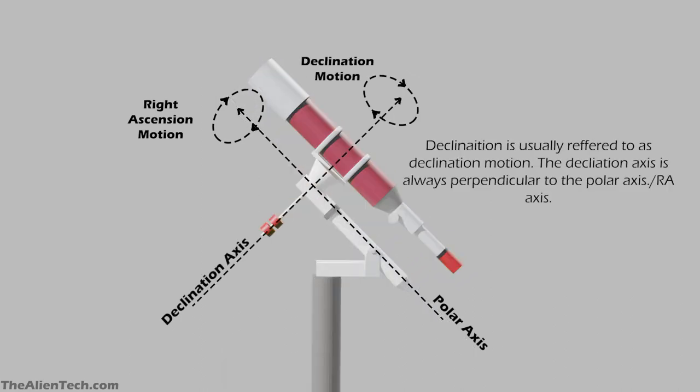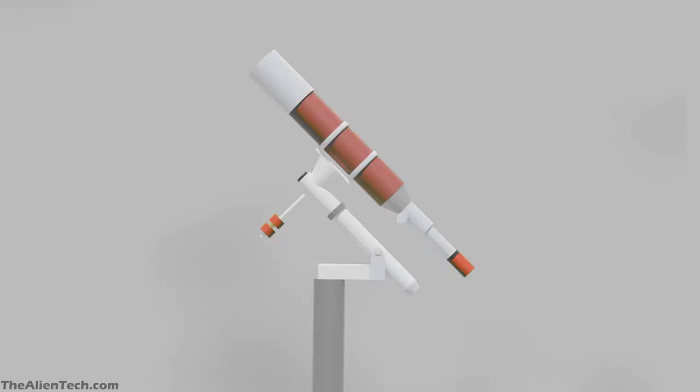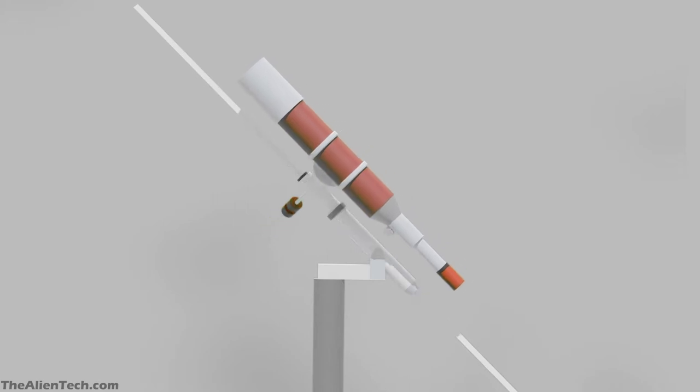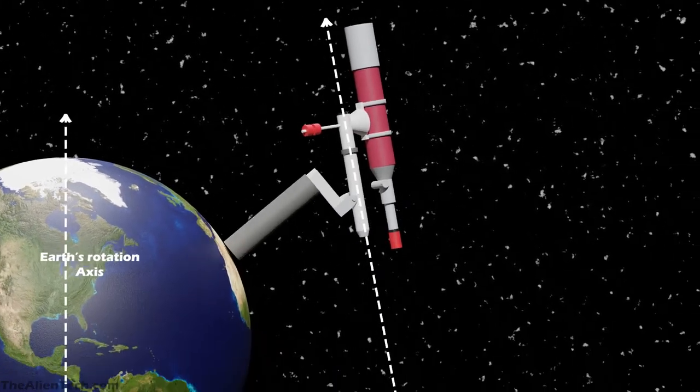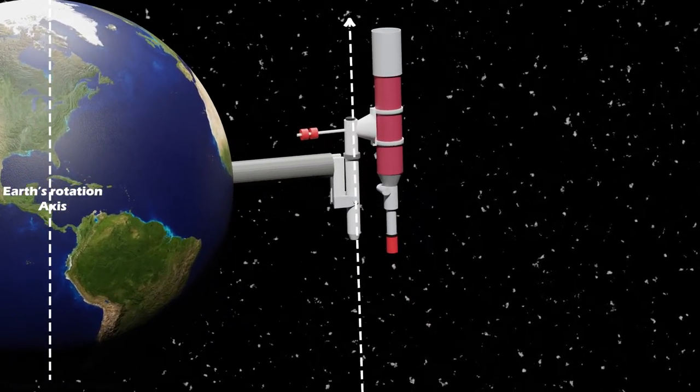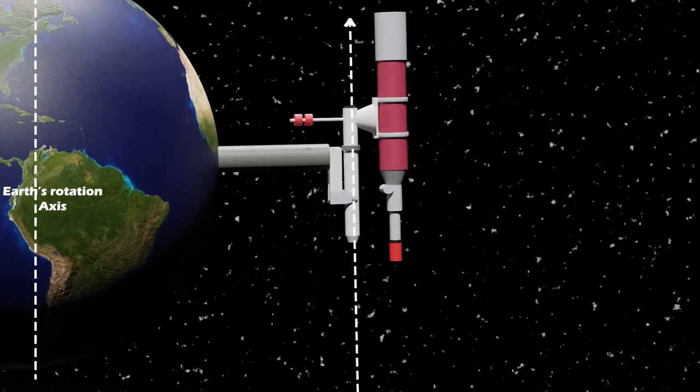And the third is the declination axis. From these three, the polar axis is the first one you have to set up. The whole working of the equatorial mount is based on this polar axis. This axis is always parallel to the earth's axis of rotation. Your telescope revolves around this axis, which helps you cancel out the earth's rotation and keeps your object perfectly in the frame.